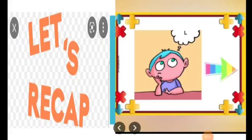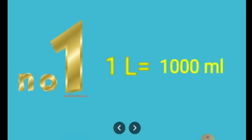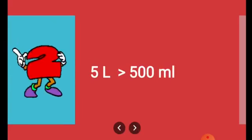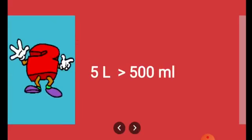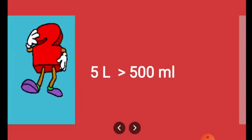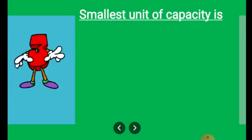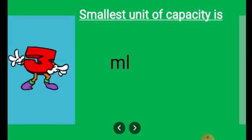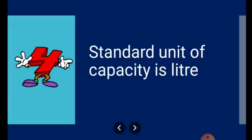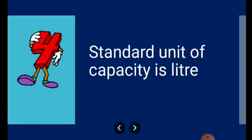Hope you understood the concept of measurement of capacity. Now let's have a recap through an assignment. Question 1: 1 litre is equal to 1000 millilitres. Question 2: Which is greater — 5 litres or 500 ml? The correct answer is 5 litres is greater. Question 3: What is the smallest unit of capacity? The smallest unit of capacity is millilitre. Question 4: The standard unit of capacity is litre.